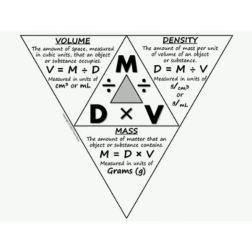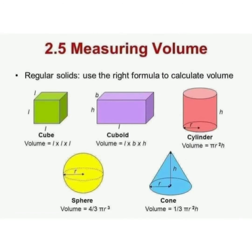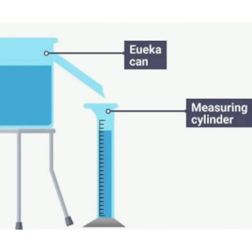To find the mass we use the formula: mass is equal to density into volume. To find the volume, the formula is: volume is equal to mass divided by density. To measure the density of regular solids such as cuboid, cube, cylinder and sphere we use these formulas. The density of irregular solids can be found using a Eureka can or a measuring cylinder.